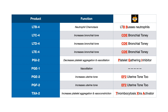All of the other leukotrienes — C4, D4, and E4 — are involved in increasing bronchial tone. So it may not surprise you to hear that in the treatment of respiratory illness, in particular asthma, you can give medications that inhibit these leukotrienes because you want to decrease bronchial tone. My mnemonic for memorizing this is CDE bronchial tone, which helps me remember that C4, D4, and E4 increase bronchial tone.